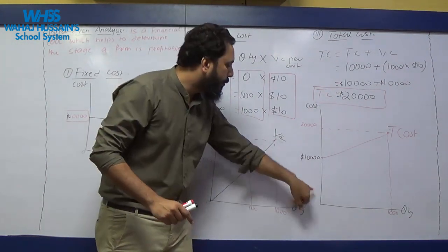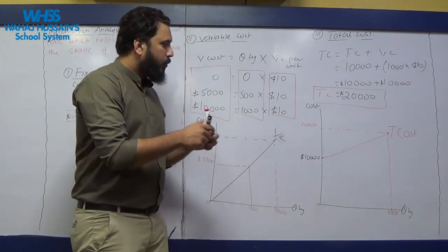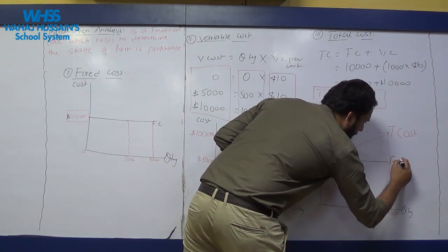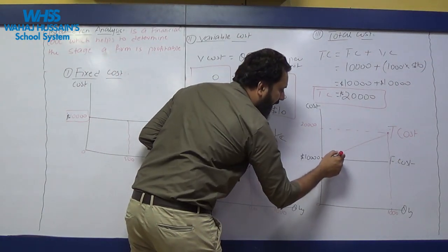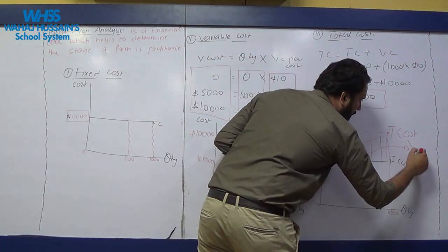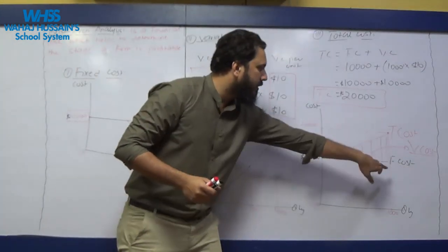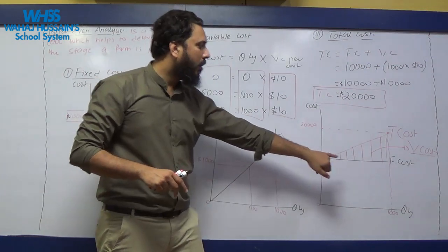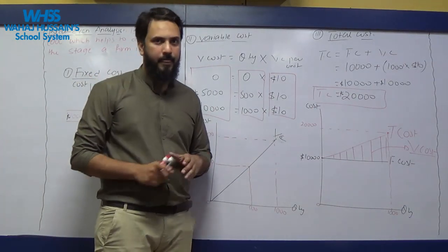If you draw the fixed cost line and the total cost curve together, the difference between them is the variable cost. So you do not need to redraw the variable cost separately — when you have drawn the fixed cost and the total cost, the gap between the two curves represents your variable cost. Thank you.